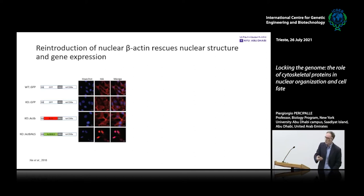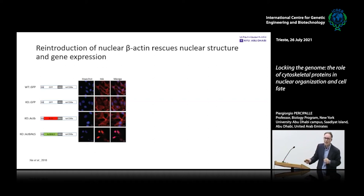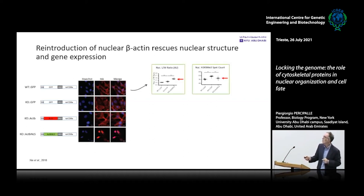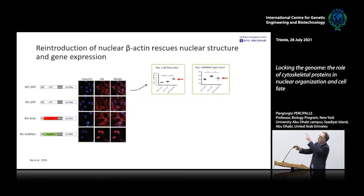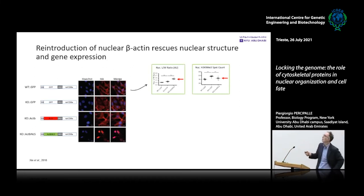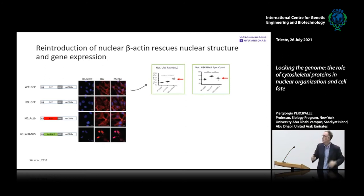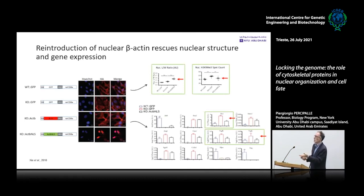This is a nuclear effect, because if you express an NLS-tagged beta-actin form in the knockout background, you rescue the level of H3K9 trimethylation — these are quantitative results, with one data point representing approximately 5,000 cells. You also reestablish changes in the nuclear architecture, with nuclei shrinking and becoming more elongated. Gene expression is also rescued, at least partially.